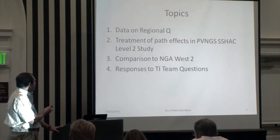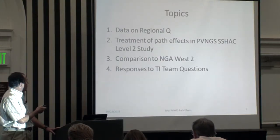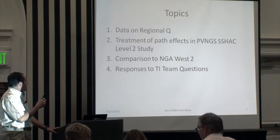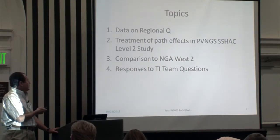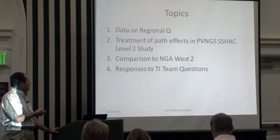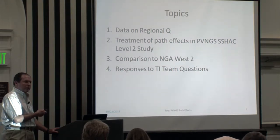Let's get to results. Data on regular Q — Kevin showed you a lot of that. I'm not going to repeat that, but I'll have one zoomed-in map that shows things in a little bit more clear way. Then I'll show you how we treated path effects in the level 2 study, which is a simplified way of doing it, but it shows what one can do with this information. Then comparison to NGA West 2, and then responses to the specific TI team questions.